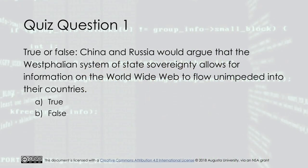Quiz Question 1. True or False? China and Russia would argue that the Westphalian system of state sovereignty allows for information on the World Wide Web to flow unimpeded into their countries. A. True. B. False. The answer is False.